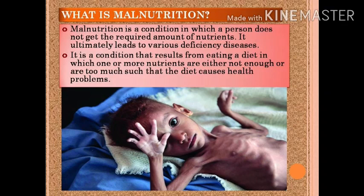What is malnutrition? Malnutrition is a condition in which a person does not get the required amount of nutrients. It ultimately leads to various deficiency diseases. It is a condition that results from eating a diet in which one or more nutrients are either not enough or are too much, such that the diet causes health problems. We should have the right amount of nutrients in our food — not more and not less. If we are not getting that, we can face the problem of malnutrition.